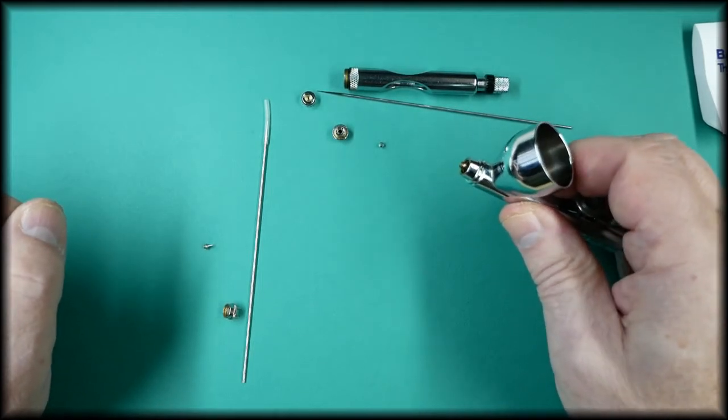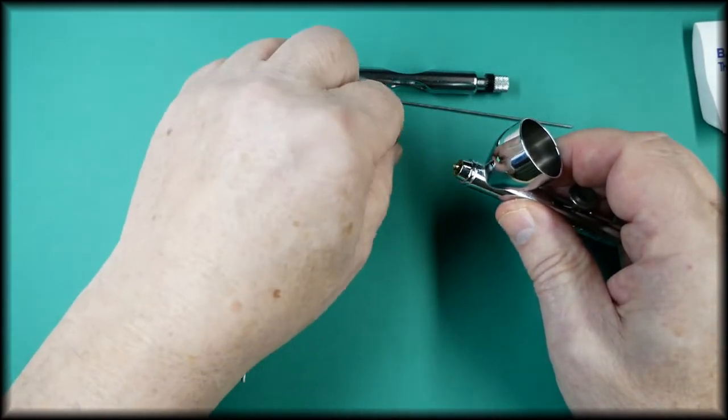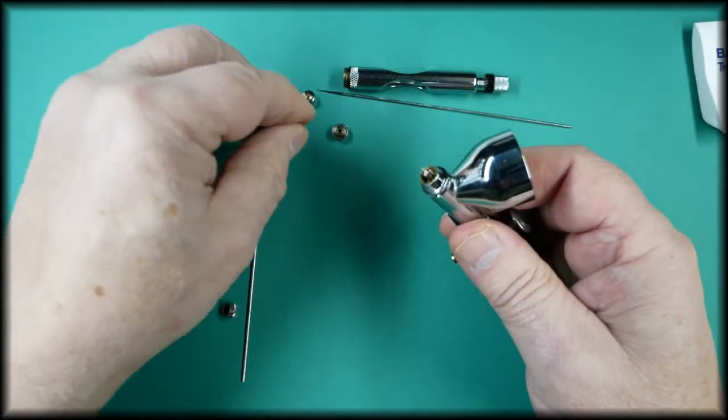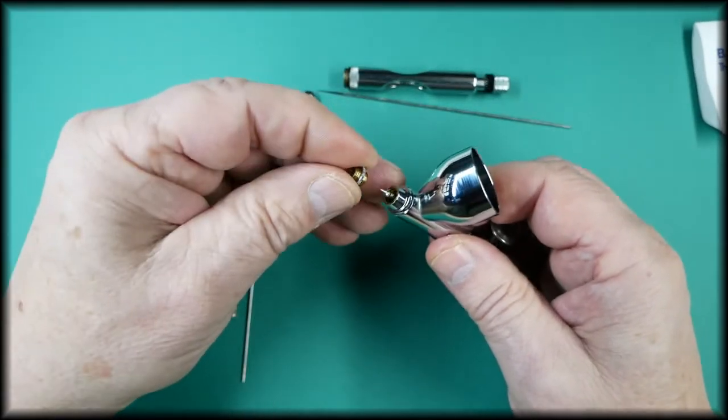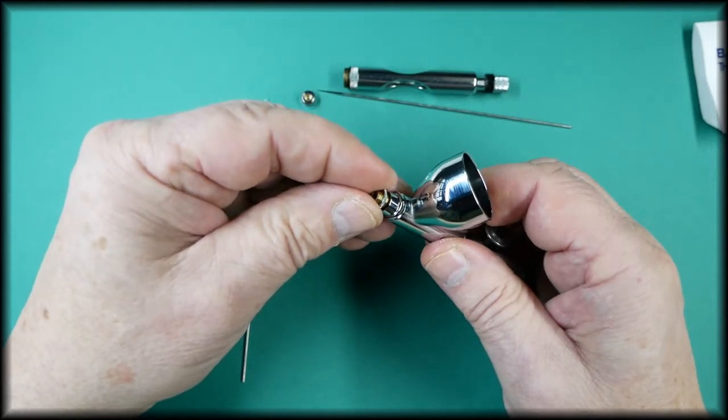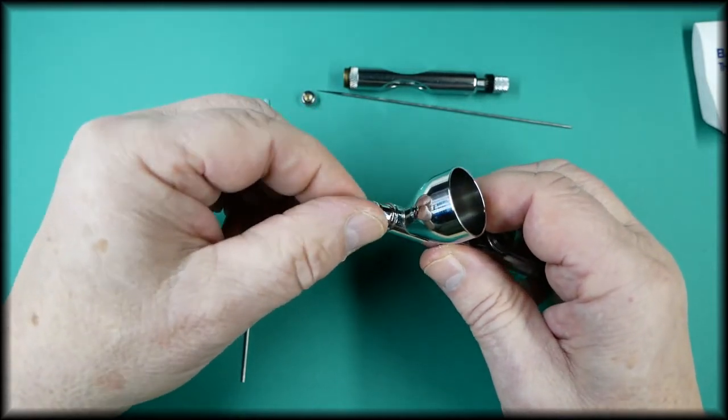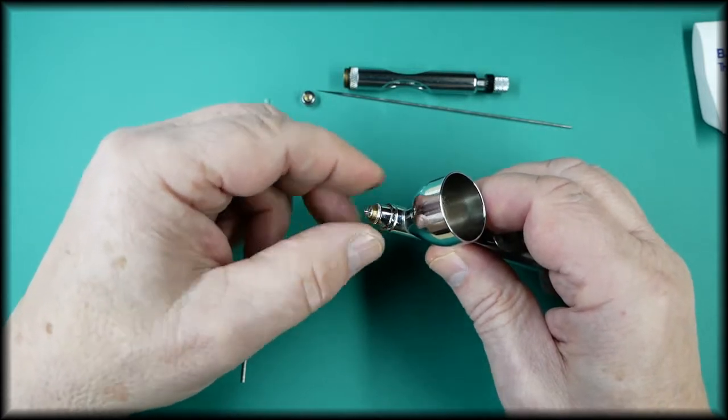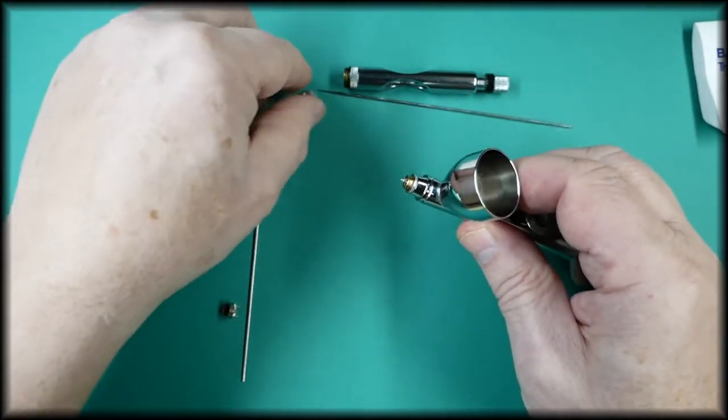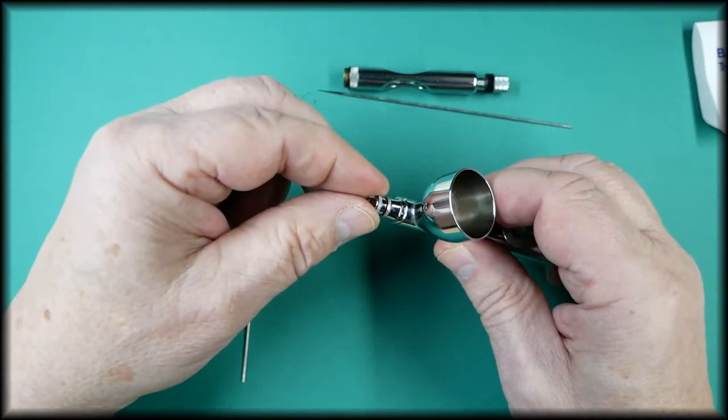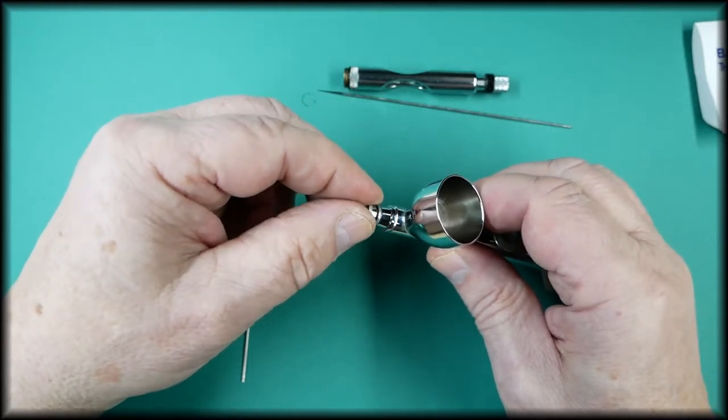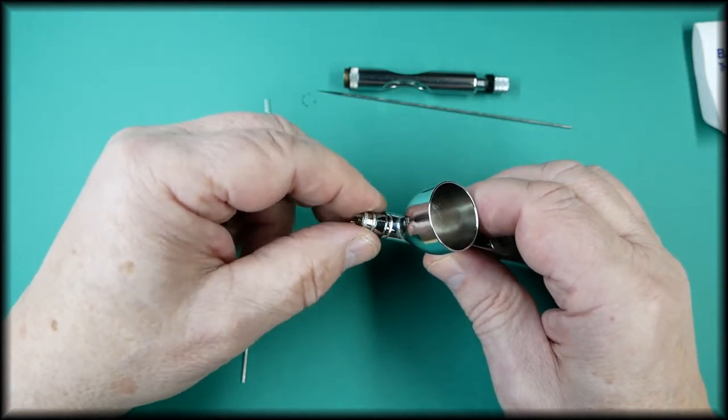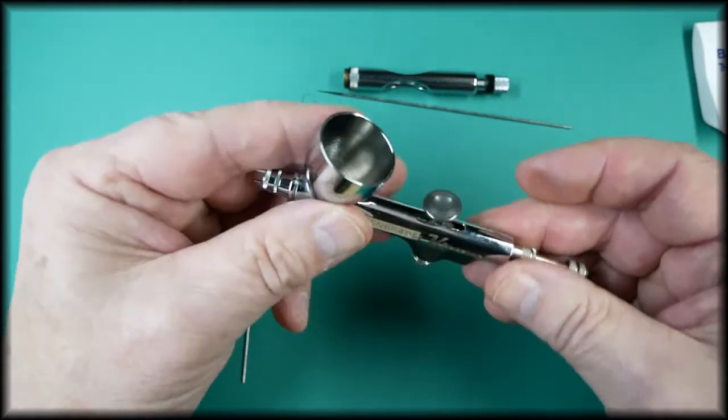To replace the parts we just reverse what we've just done. Sit the tip in place, fit the hold down ring, be careful of the threads, spray regulator, and everything here is just finger tight, no pressure needed.